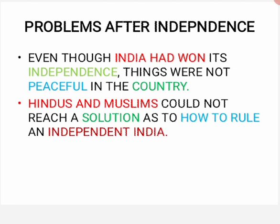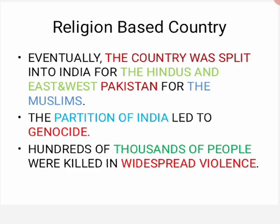Even though India had won its independence, things were not peaceful in the country. Haan, independence mil gayi thi, par abhi bhi kuch cheezein theek nahi thi. Hindus and Muslims could not reach a solution as to how to rule an independent India. Religion-based countries bane — India for Hindus and Pakistan for Muslims — but this partition led to genocide. Genocide wo hota hai jisme bahut zyada logon ki maut ho jaaye. And widespread violence — bahut zyada violence create ho gayi, bahut saare log is mein maare gaye.